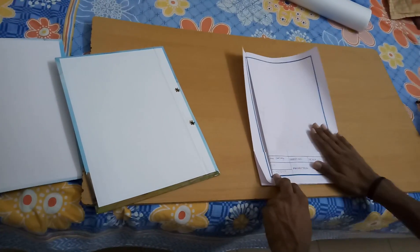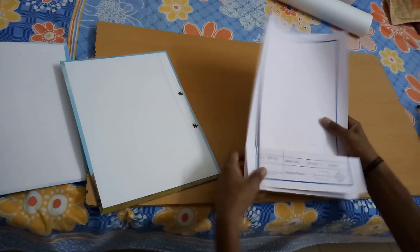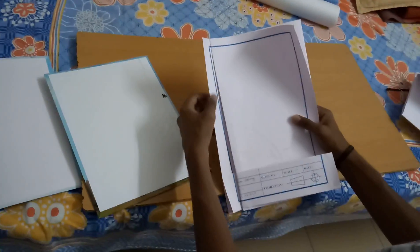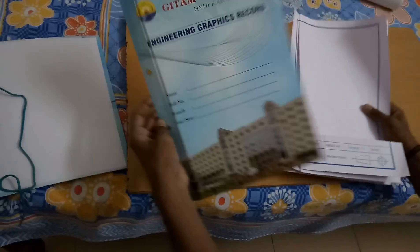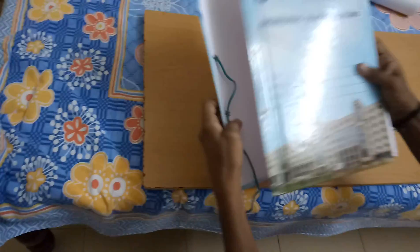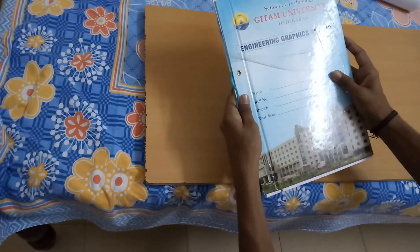you complete the folding of drawings this way. Now you can make two holes over here so that you can put it in the graphics record and you can tie it up this way.